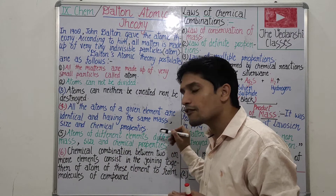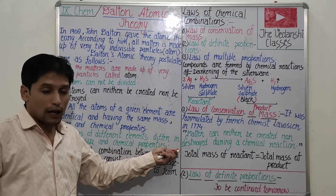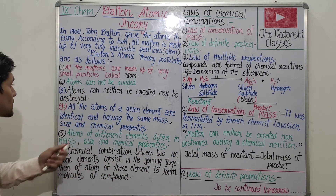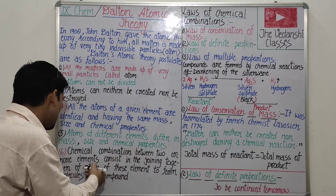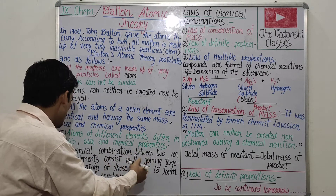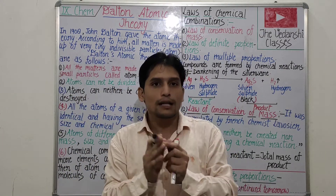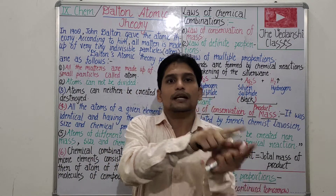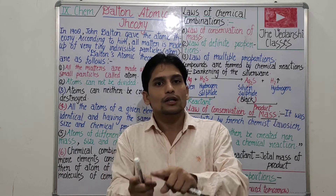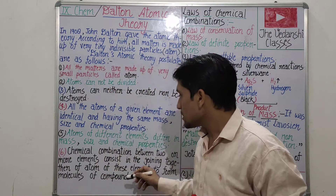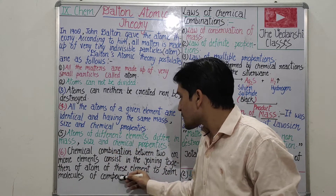However, this is not possible in the case of isobars. The last postulate of Dalton's atomic theory is: chemical combination between two or more elements consists in the joining together of atoms of these elements to form molecules of a compound. Atoms of elements form molecules of the element, and atoms of different elements combine in a fixed ratio to form compound molecules.